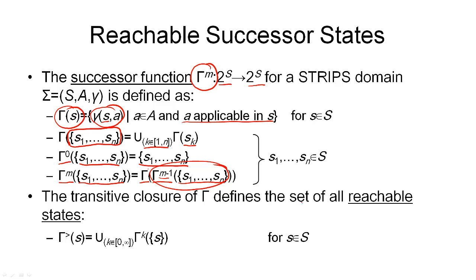The transitive closure of this function then simply defines the set of all reachable states. So this is defined here. All the reachable states are simply the union of K from 0 to infinity of gamma K of S. So we start in our initial state and we apply K steps from there. This is this set.